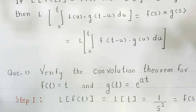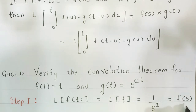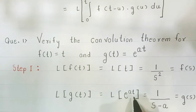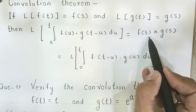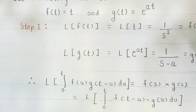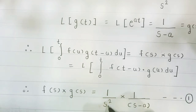In Step 1 we find the Laplace of our functions. Laplace of f(t) = Laplace of t = 1/s². We use the formula Laplace of t^n, and we call this result F(s). Similarly, the Laplace of e^(at) equals 1/(s−a), and we call this G(s). So the product F(s)·G(s) = 1/s² · 1/(s−a). This is Step 1.